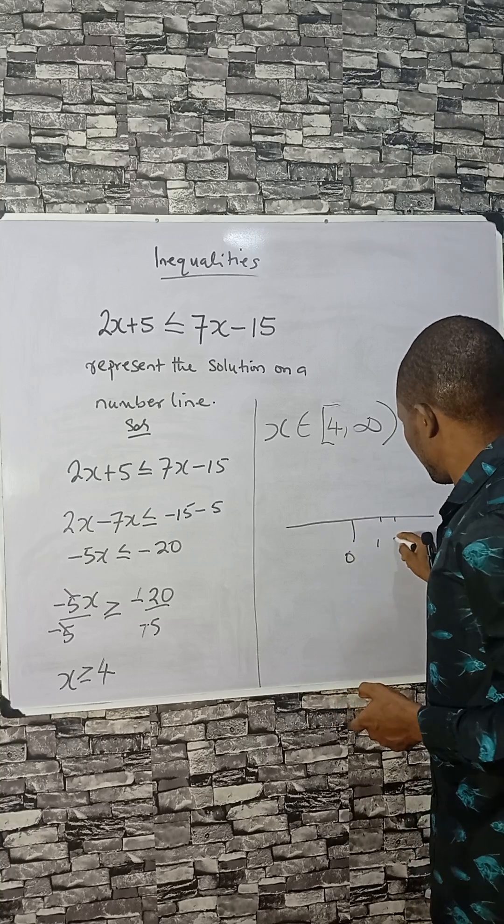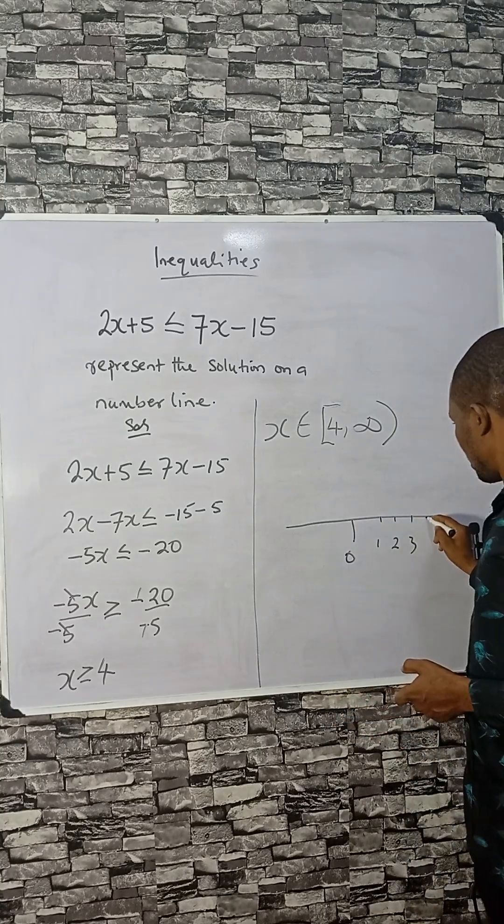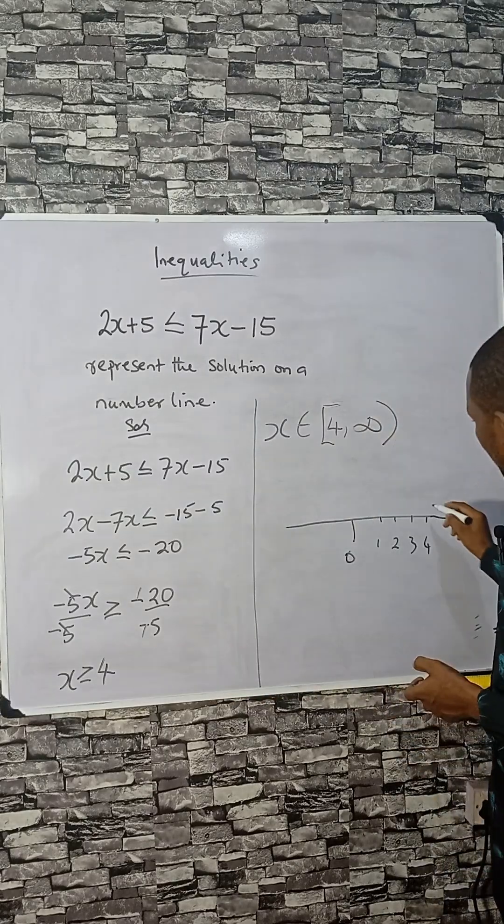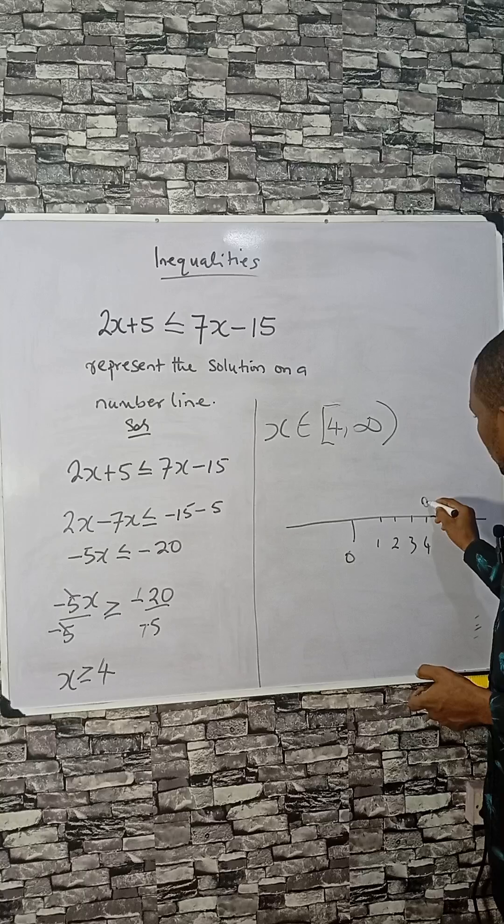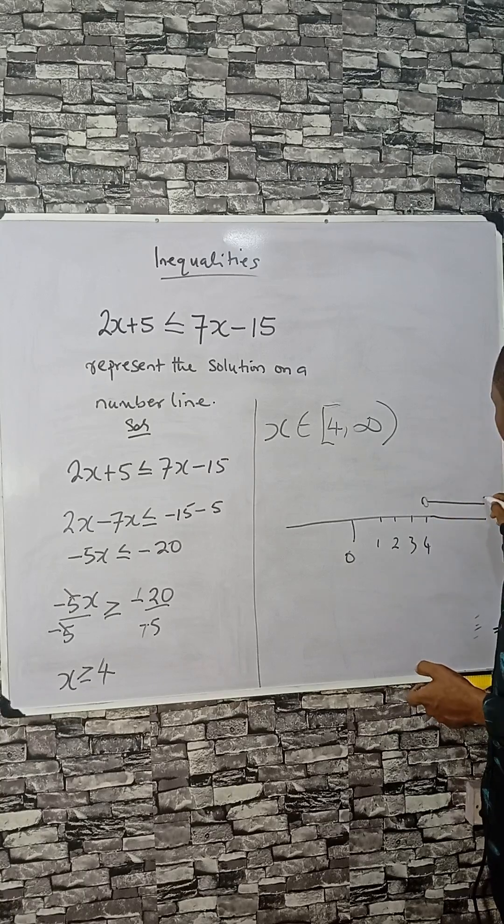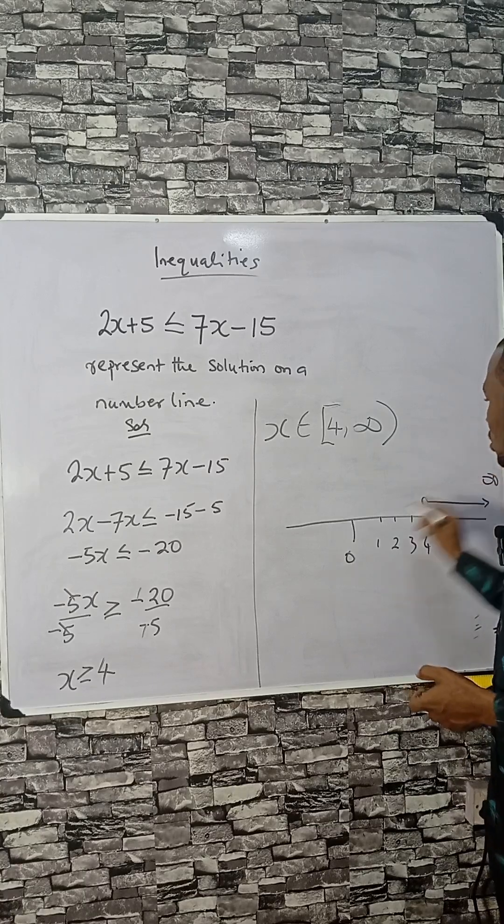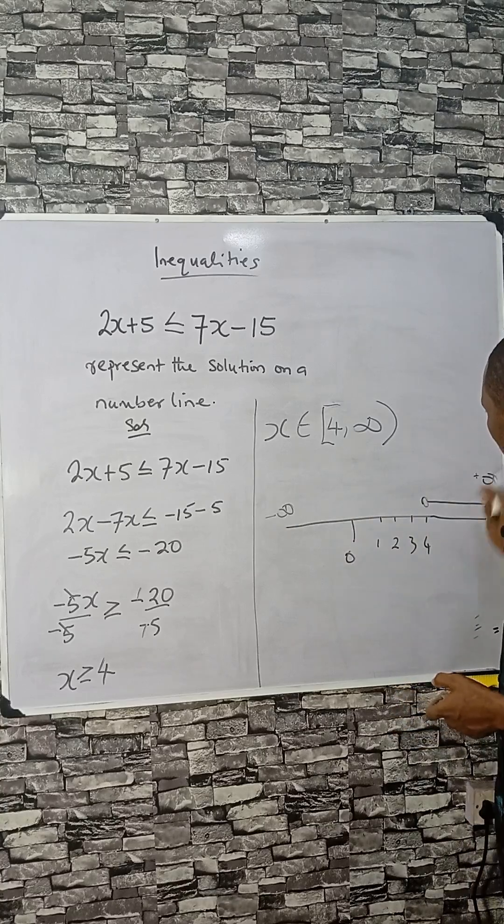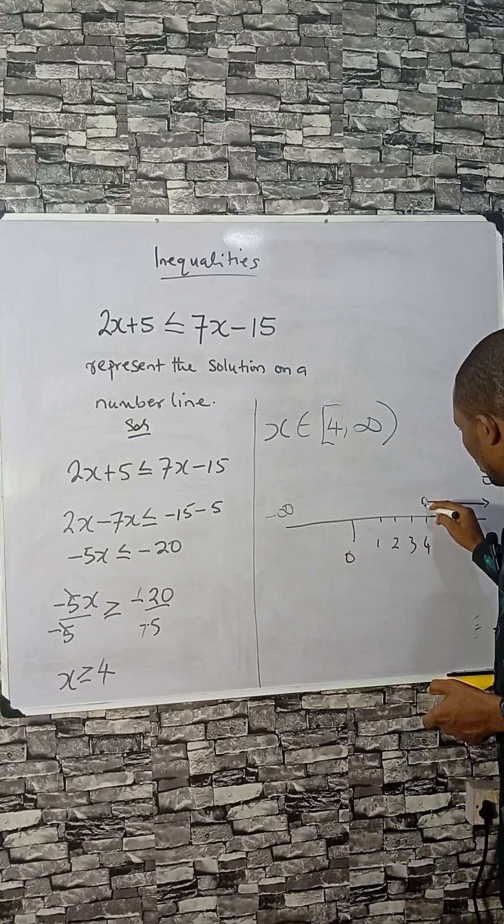We mark 1, 2, 3, and 4 on the number line. From 4, since x ≥ 4, we extend to positive infinity. This end is positive infinity, the other end is negative infinity. We shade the region from 4 onwards.